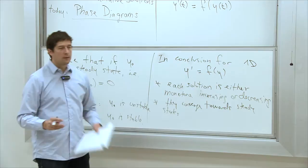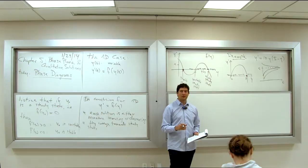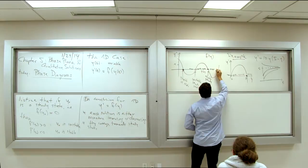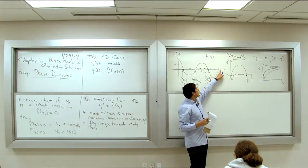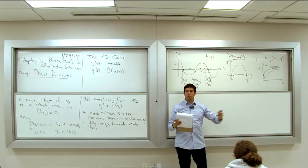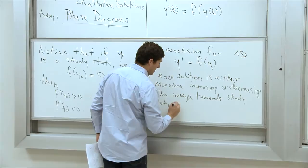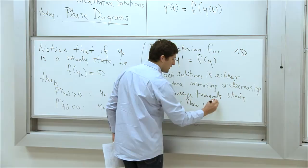Could a solution not converge to a steady state? Yes — it could blow up to infinity. For example, if f is always positive and you start at some point, the solution just keeps increasing and blows up to infinity.